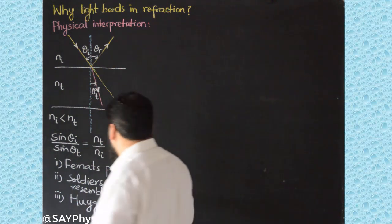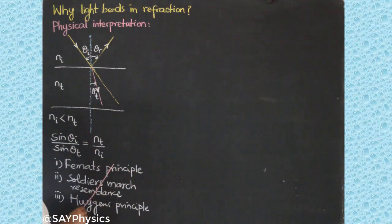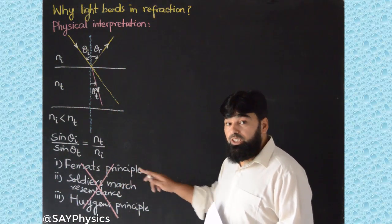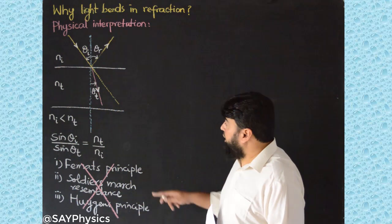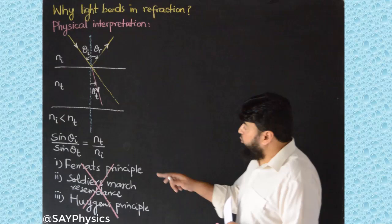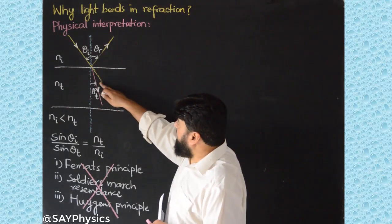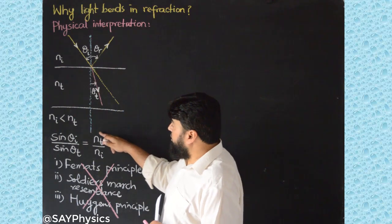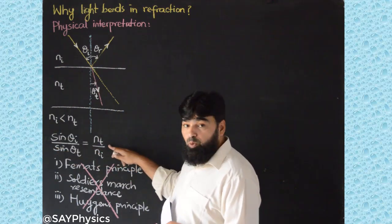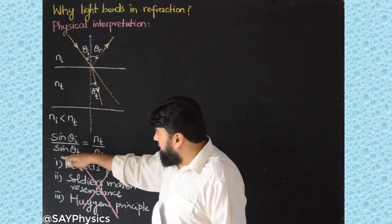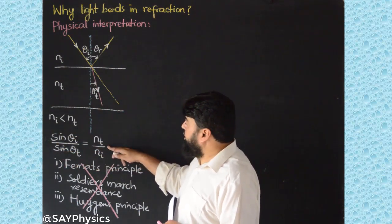So if these are not right, then what is the right explanation for why this light bending happens? We will have to understand what physically is happening here. We will have to go back to Snell's law from where Snell's law has been derived. Snell's law is actually from the limitations in Fresnel equations.